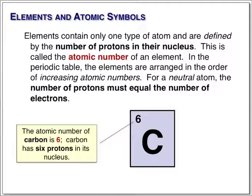It doesn't matter how many neutrons are in the nucleus. It doesn't matter how many electrons are around the atom. If the atom has six protons, it is defined as a carbon atom.